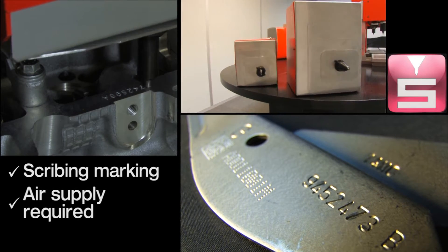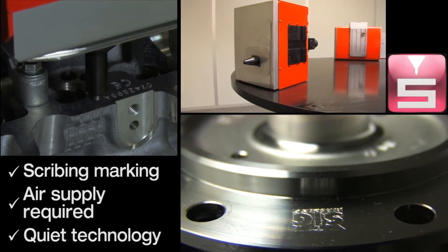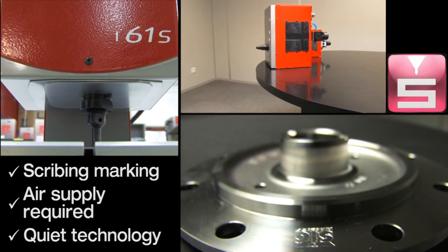The mark is made through contact of a tungsten carbide stylus with the surface of the part. An optional diamond-tipped stylus is also available.